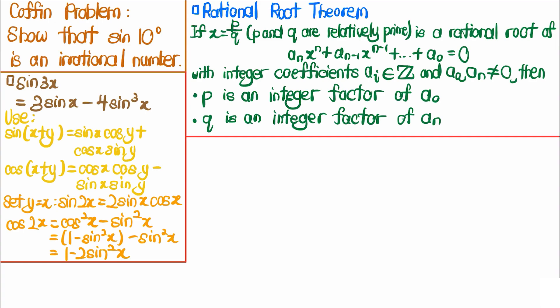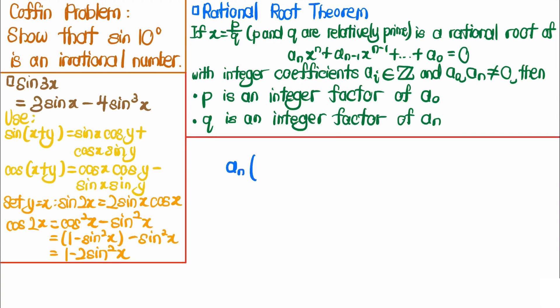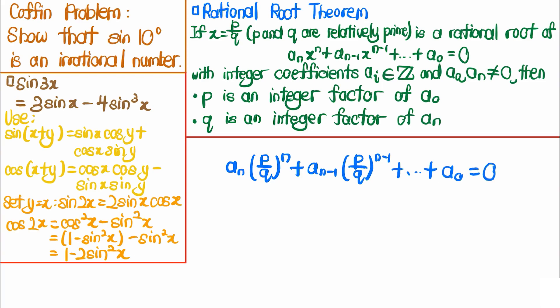First let's prove the rational root theorem. Since x is a rational root of the given integer polynomial, we substitute x = p/q, and we get aₙ·(p/q)ⁿ + aₙ₋₁·(p/q)ⁿ⁻¹ + ... + a₀ = 0. To clear the denominators, we multiply the whole equation by qⁿ.